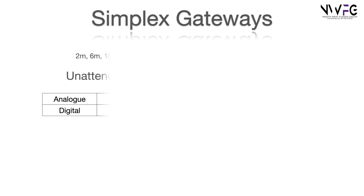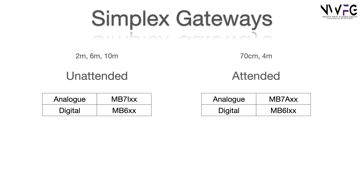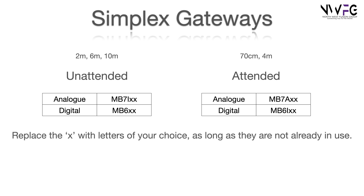Simplex gateways are a little different. They come in two flavours: unattended and attended. Unattended includes gateways on 2m, 6m and 10m — these are all bands where we are the primary user. Analogue simplex gateways are MB7i and digital are MB6, with suffixes of your choice. Attended gateways are on 70cm and 4m, and these are bands where we are secondary. Analogue gateways are MB7i and digital are MB6i. Again, you can replace the X's with letters of your choice as long as they're not already in use.